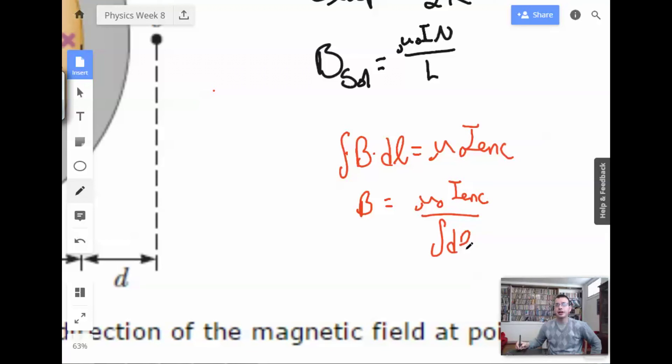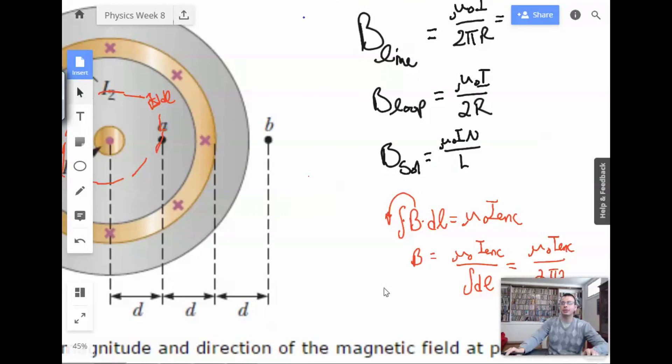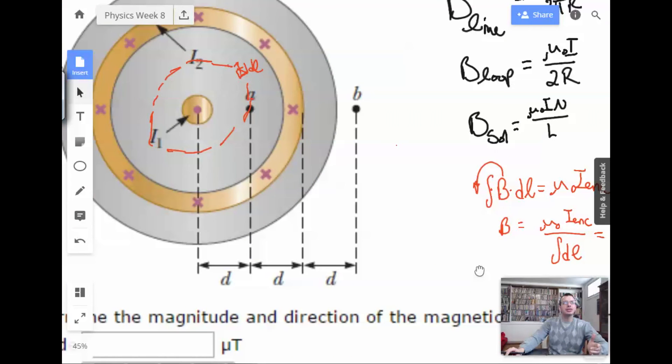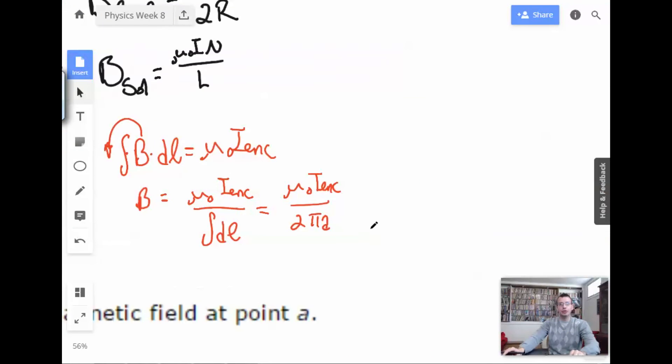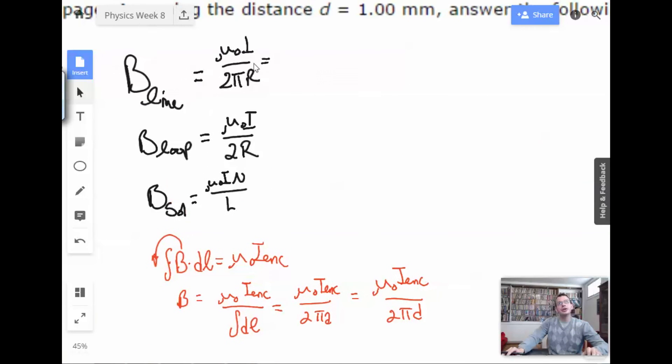So, integral dl. Now, this guy right here that I took the B and moved him out. This dot dl is just going to be the circumference of the circle. So, we're going to have μ₀I enclosed over 2π. Instead of r, I'm going to use d because that's the distance we're talking about. Equals μ₀I enclosed over 2πd. If we scroll up, same equation.